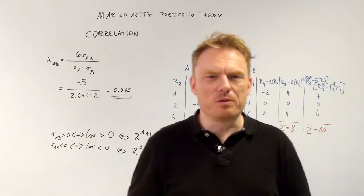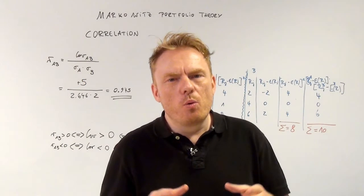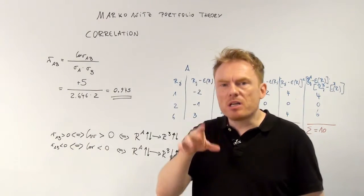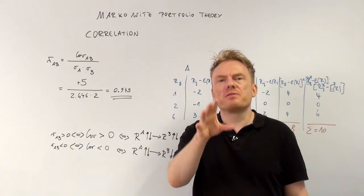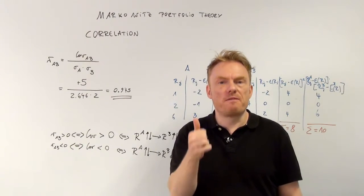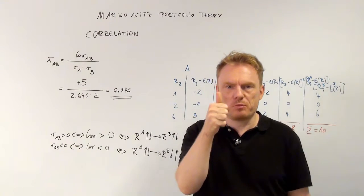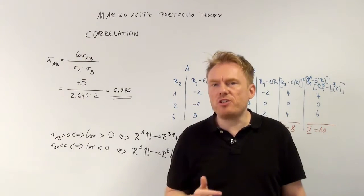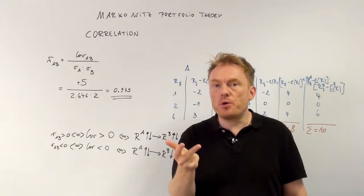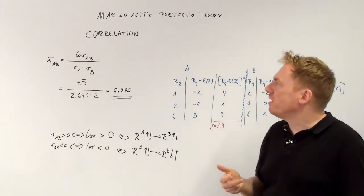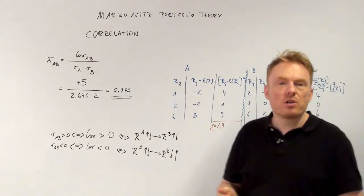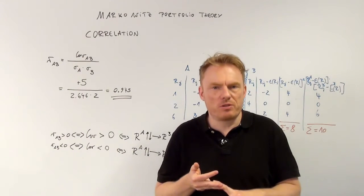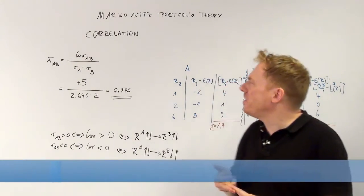Welcome to our next video. We're talking about Markowitz portfolio theory, which consists of different things to calculate: first, expected returns; second, variances and standard deviations; third, covariance; and fourth, correlation coefficient — and that's what we're talking about in this video.